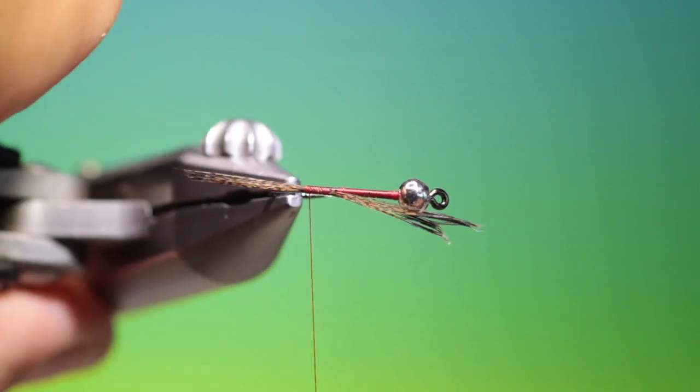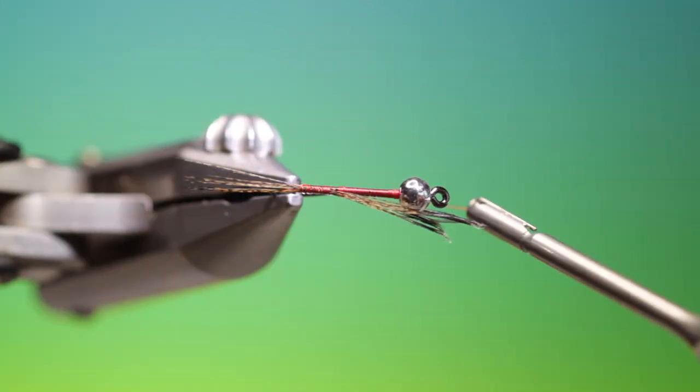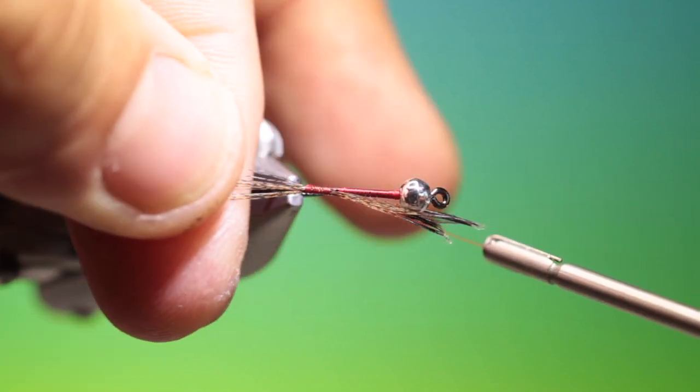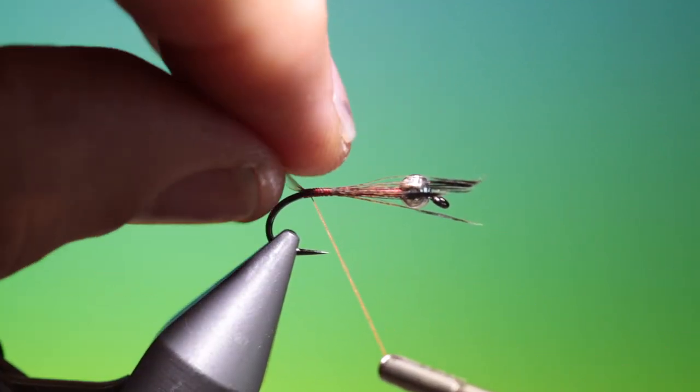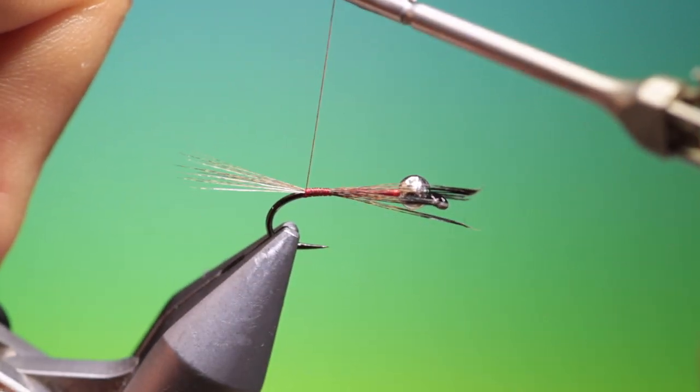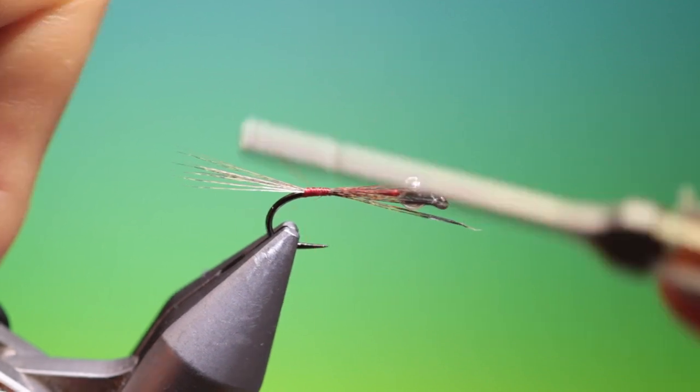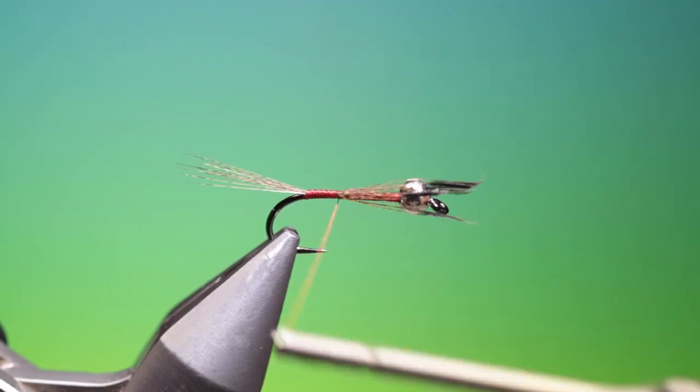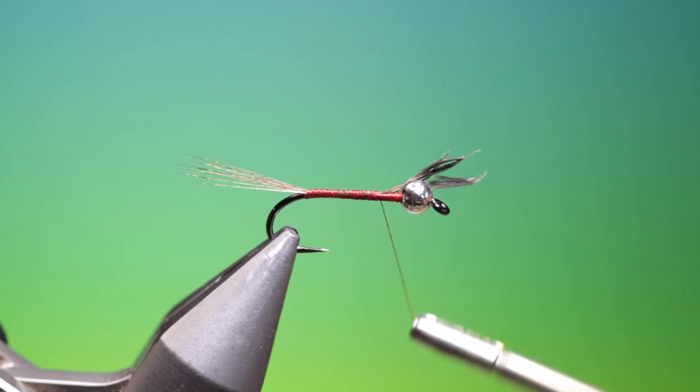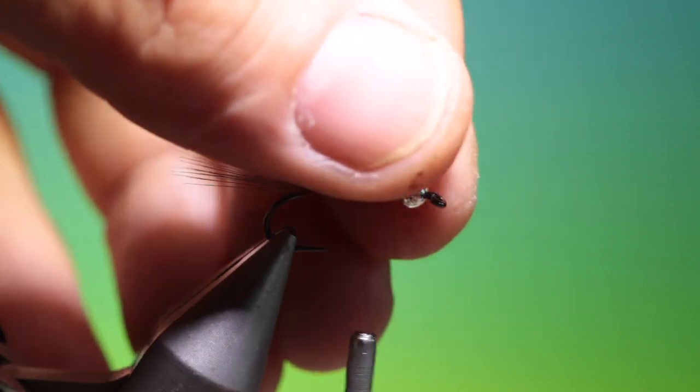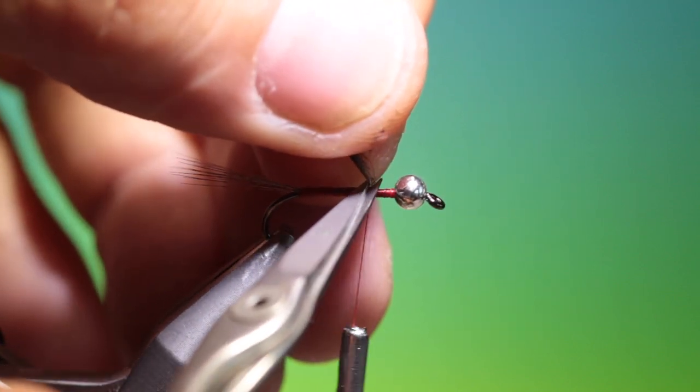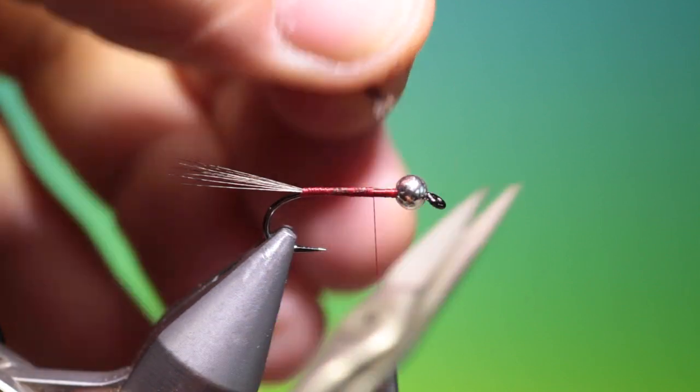And then we'll go once underneath the tail to splay it out like a fan. Tighten that up, hold it in position, and then we can go back up to back there.